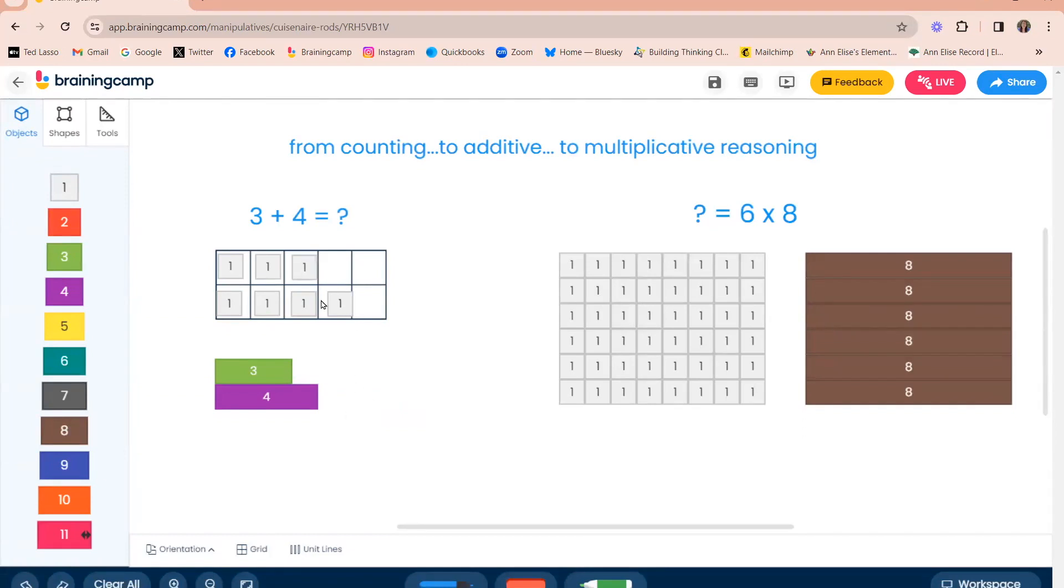Another way students might solve this problem of three plus four is to think about making a five. Benchmarks of five and ten are a critical cornerstone of building number sense with our students. So they may think about taking one from the three, decomposing the three to give one from the three to the four to rename this expression as five plus two which might be easier for their brain. I can help make that visual to you here by lining up the four and the three in a linear way and then down below lining up that five rod.